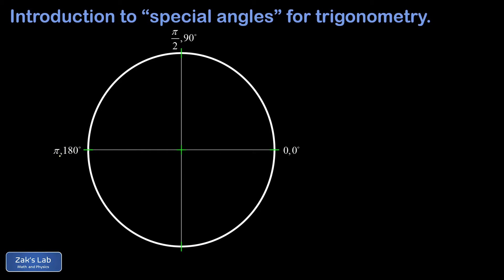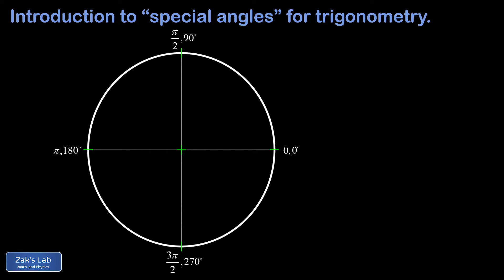Now that we know pi over 2 is the same as 90 degrees, we can get the angle at the bottom of the circle by adding 90 degrees to 180 degrees, giving 270. In radians that's pi plus pi over 2. Getting a common denominator: 2 pi over 2 plus pi over 2 gives us 3 pi over 2. So that bottom angle is 3 pi over 2 radians, or 270 degrees.